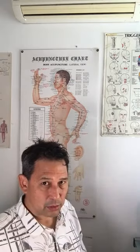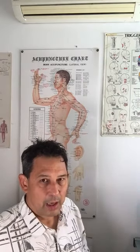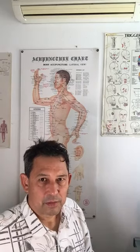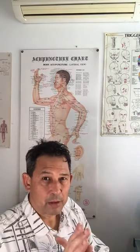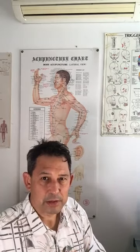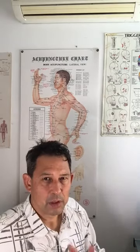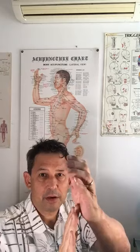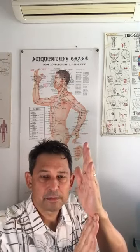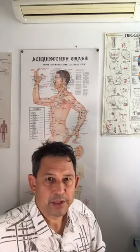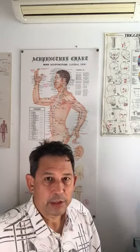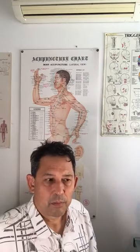Whenever we do excessive computer work — desktop, laptop, or smartphone — what happens is we get taken off that proper stacking of joints on a vertical line. Proper spinal alignment looks like all the major joints of the body stacked one on top of another.